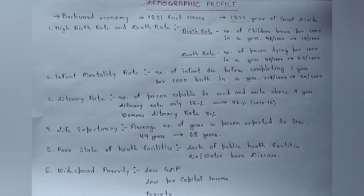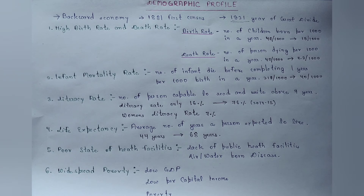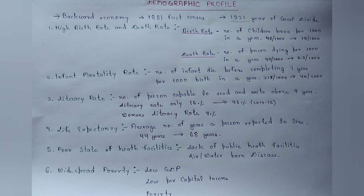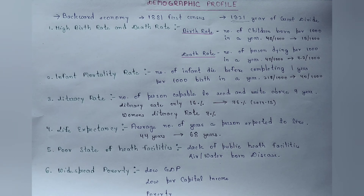उस वक्त हमारा जो GDP growth rate था वो बहुत ही कम था। जब British India में नहीं आए थे, उससे पहले जो हमारा GDP था वो world में सबसे ज़्यादा था — China और India मिलकर about 50-60% world trade किया करते थे। लेकिन जैसे ही British 18th और 19th century में आए, हमारा GDP में contribution धीरे-धीरे कम होता गया, जिसके कारण per capita income भी कम हो गई, poverty बढ़ती गई और लोगों की economic condition बहुत खराब होती गई।